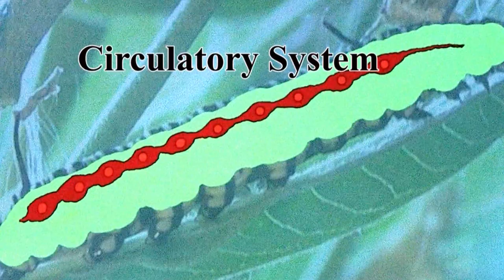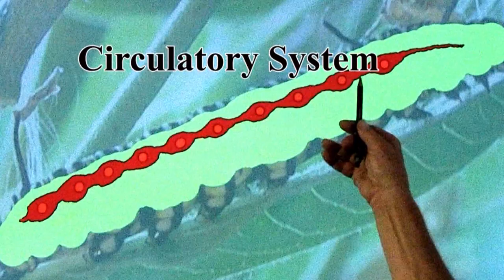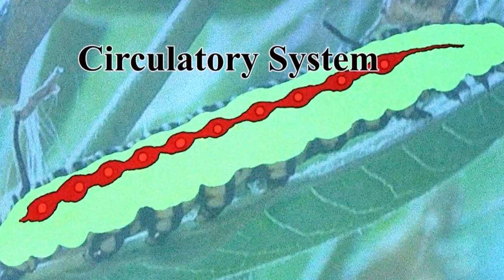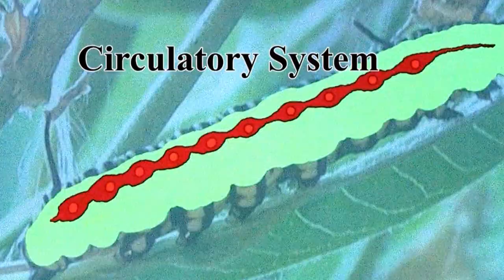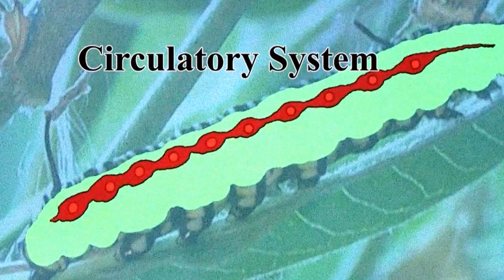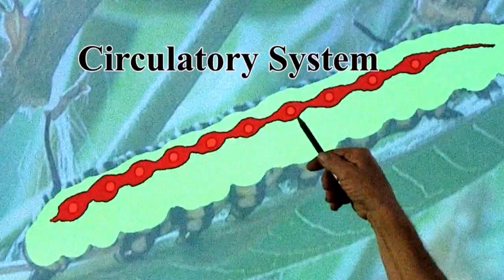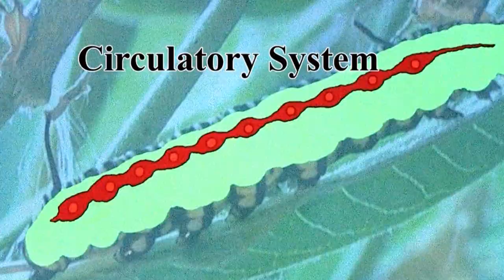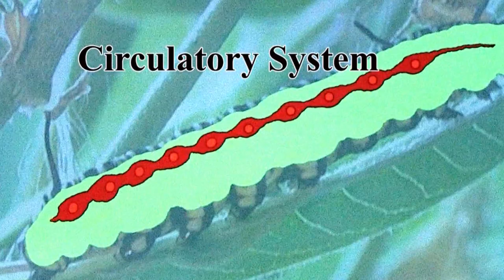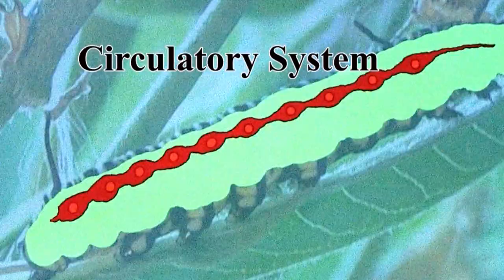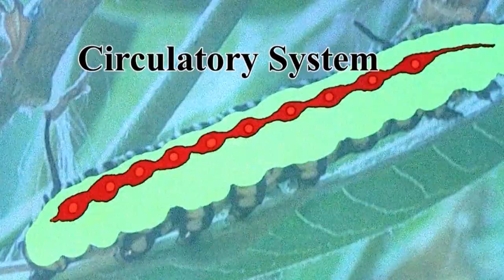This is the heart in this larval form of a butterfly, and it pumps, but since it's an open system it doesn't have little vessels. It pumps at a low, low pressure. The blood just oozes in and out of openings in this circulatory tube — so this is a heart with holes in it. The blood oozes based on the envelope squeezing or relaxing in and out of these openings. There's no system of vessels, no little tubes carrying blood here and there — it just oozes in the soup of the internal anatomy of this caterpillar.